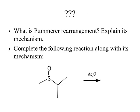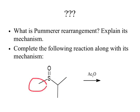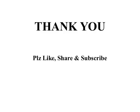I have given two questions. The first question is quite simple: what is the Pummerer rearrangement? You are supposed to write its statement and explain its mechanism. Second: complete this reaction, where you have an isopropyl group on one side and a methyl group on the other. Think about which is the more acidic position, and accordingly the introduction of the acetate group will take place at that position. I hope you have understood this. If you have any doubt, you can put it in the comment box. Thank you so much — please like, share, and subscribe.